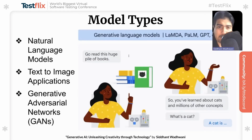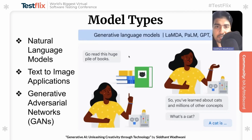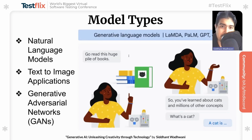Let's look at the different model types. A model is a set of algorithms trained on a specific dataset. The different model types are natural language models, text-to-image applications, and generative adversarial networks — that's GANs. In terms of natural language models, you must have heard of GPT, or Generative Pre-trained Transformer, developed by OpenAI. GPT has become notable for its large-scale use of transformers and ability to generate human-like content — for example, ChatGPT, GitHub Copilot, and GPT-4, which is now integrated within Microsoft's Bing.